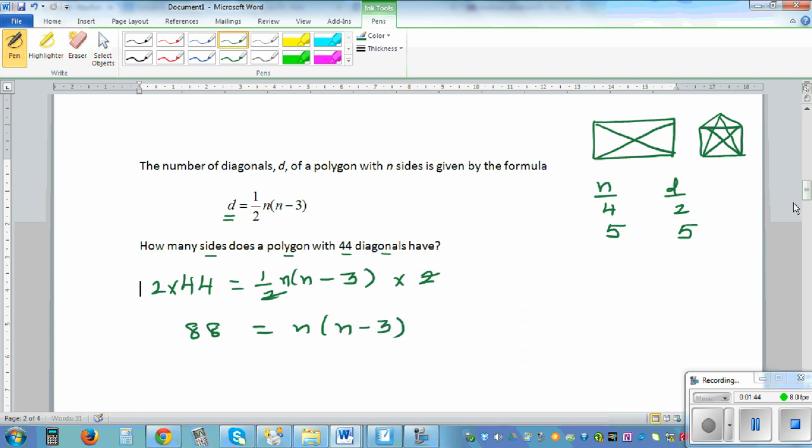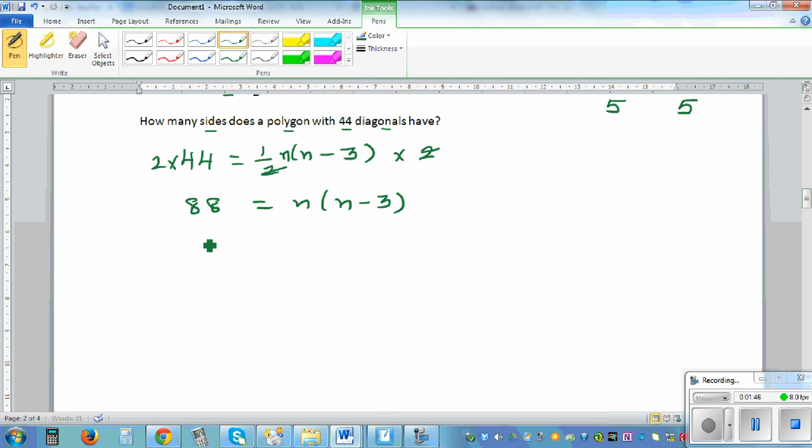Expanding this out, you can say 88 equals n squared minus 3n. Subtracting 88, let me write this in a general quadratic form.